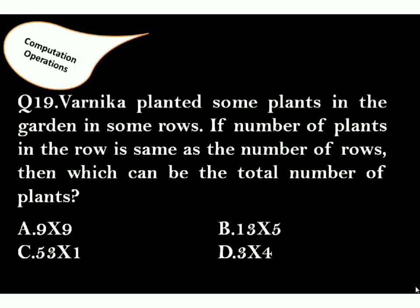Varnika planted some plants in the garden in some rows. If number of plants in the row is same as number of rows, then which can be the total number of plants? Correct answer is option A, because it has same rows and same columns.